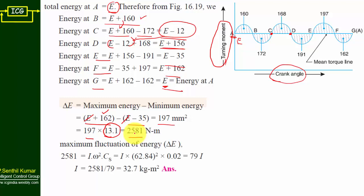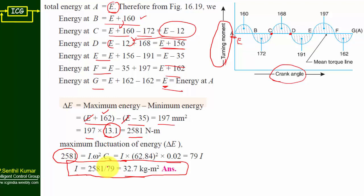Using the formula ΔE = I × ω² × CS: ΔE = 2581 N·m, ω = 62.84 rad/s (given), CS = 0.02. Substituting: 2581 = I × (62.84)² × 0.02, which gives 79I = 2581, therefore I = 32.7 kg·m². This is the answer for part one — the moment of inertia of the flywheel.